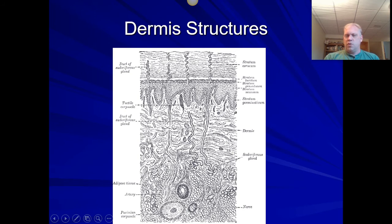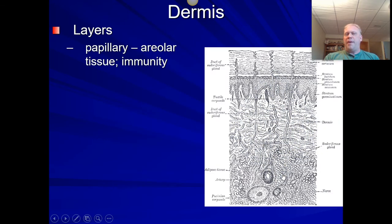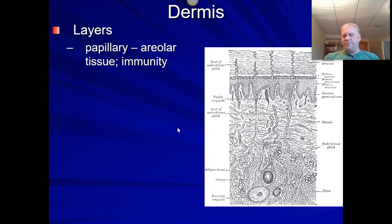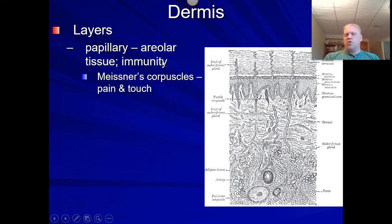There are two layers within the dermis. The topmost is the papillary layer — loose areolar connective tissue that functions as an immunity layer with fibers providing flexibility and stretch. It also contains pain and touch receptors called Meissner's corpuscles — the word 'corpuscle' just means little bodies, named after their discoverer. These Meissner's corpuscles receive the sense of pain and translate it.